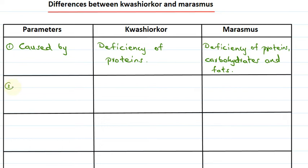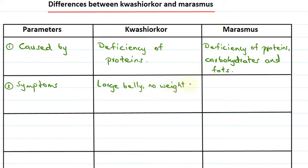Now let's see the symptoms. The symptoms of Kwashiorkor include a large belly, no weight gain, and decreased muscle mass. These are a few common symptoms of Kwashiorkor.